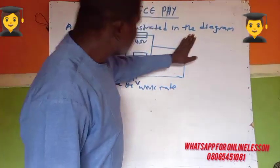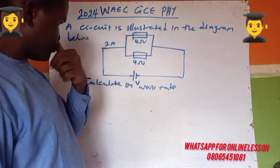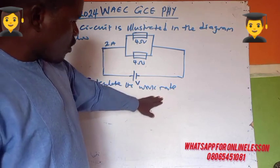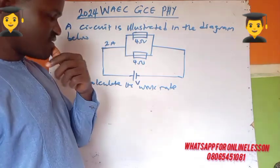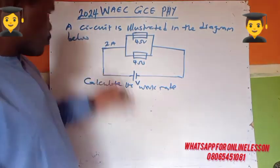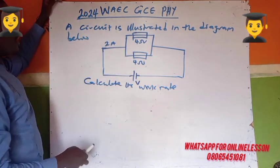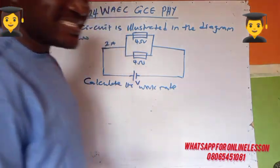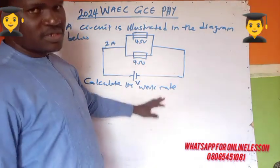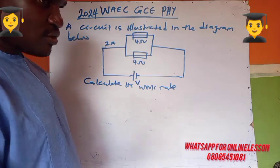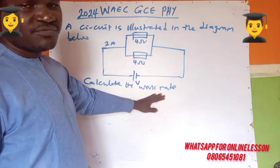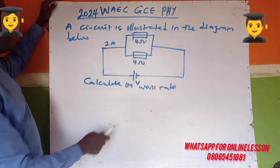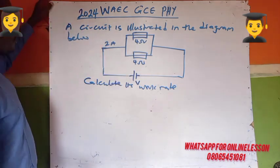A circuit is illustrated in the diagram below. You have to calculate the work rate, which is power. Power is defined as the rate of doing work — that's what we call work rate. So they call it work rate, and here you have four ohms.